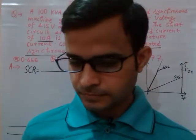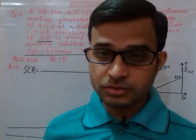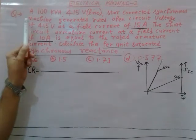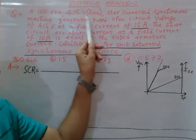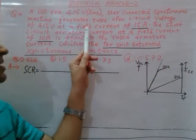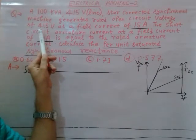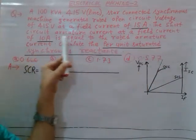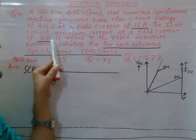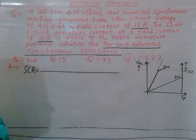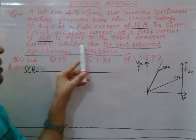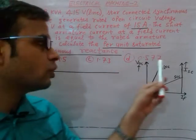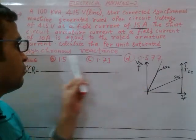Hello students, this question has been asked in the examination. A 100 kVA, 415 volt star-connected synchronous machine generates rated open circuit voltage of 415 volts at a field current of 15 amperes. The short circuit armature current at a field current of 10 amperes is equal to the rated armature current on short circuit. Calculate the per unit saturated synchronous reactance.